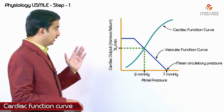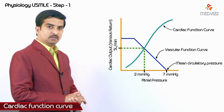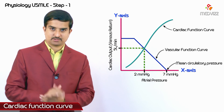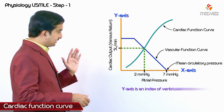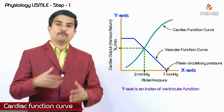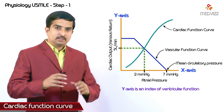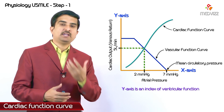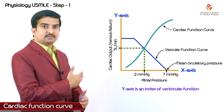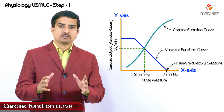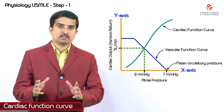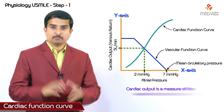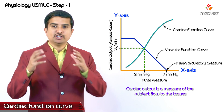Here we have a vertical line as well as a horizontal line. The vertical line is the y-axis and the horizontal line is the x-axis. In this graph, the y-axis is the index of ventricular function — the best indices or measures of the work performed by the ventricle. Cardiac output, blood pressure, stroke work, and stroke power can all be calculated by means of the y-axis. Remember that cardiac output is a measure of nutrient flow to the tissues.